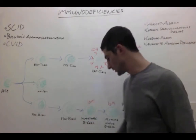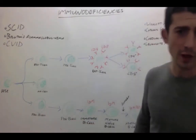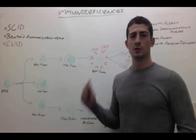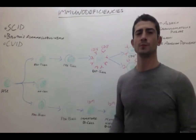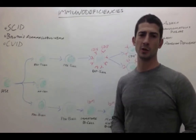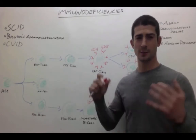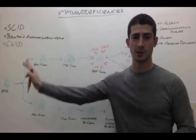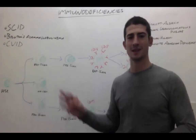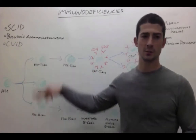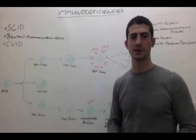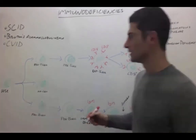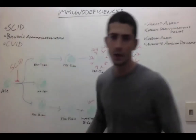That's the normal process. Starting with SCID — severe combined immunodeficiency — as the name implies, it's severe and it's combined, causing both lineages to be affected by the immunodeficiency. SCID blocks your hematopoietic stem cell right out of the gate, so you get no T cell, no B cell, no NK cell production at all.